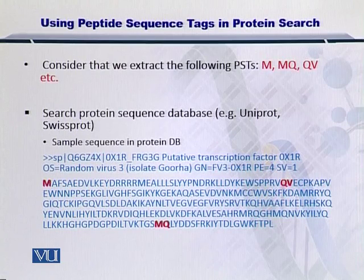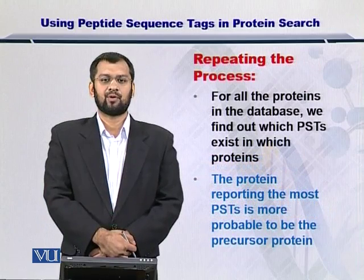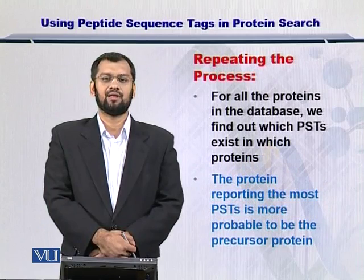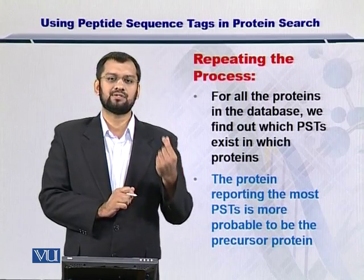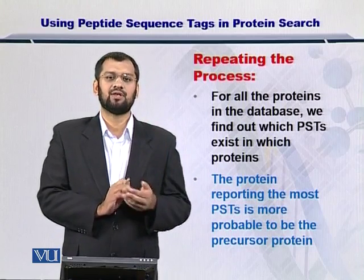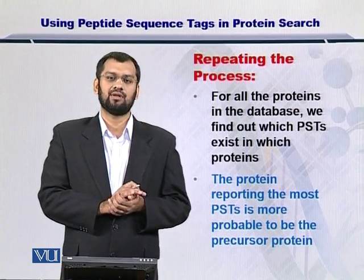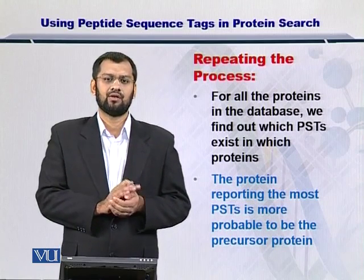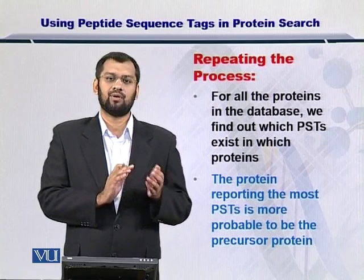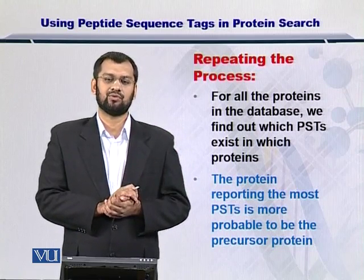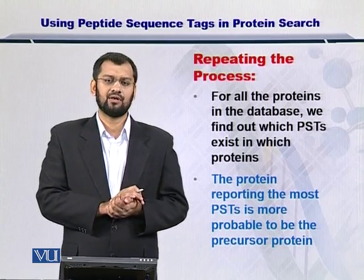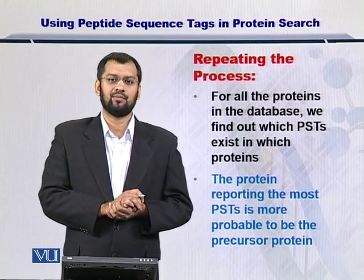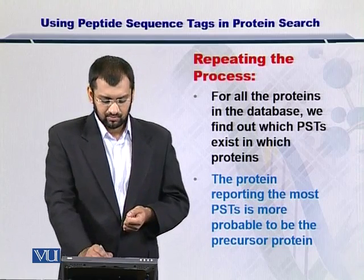The protein which has the most number of matches will be the most probable. We have to repeat this process for all the proteins in the protein sequence database, looking at each peptide sequence tag in each protein. Of course, there can be a situation where multiple proteins have these peptide sequence tags, and the proteins reporting these peptides can be candidates or they can be false positives as well.